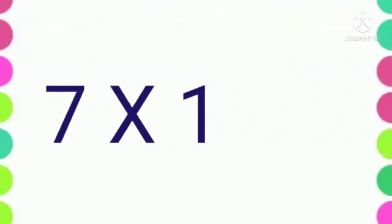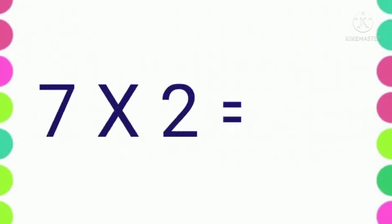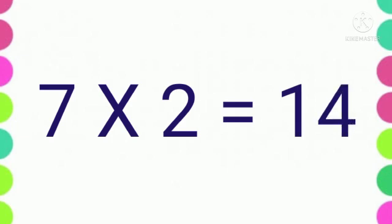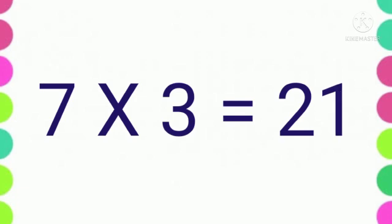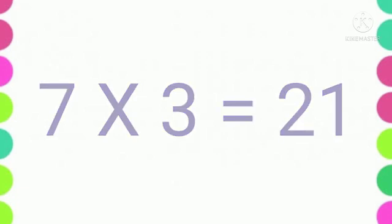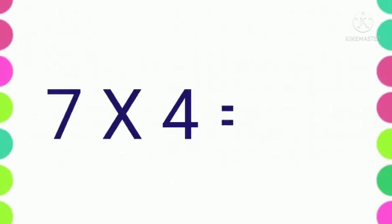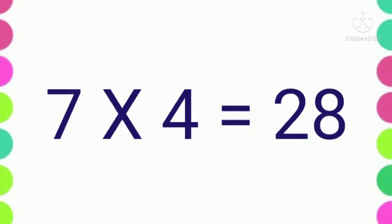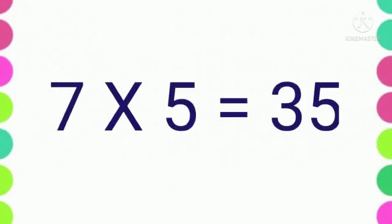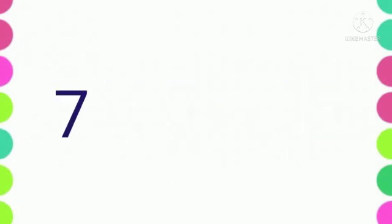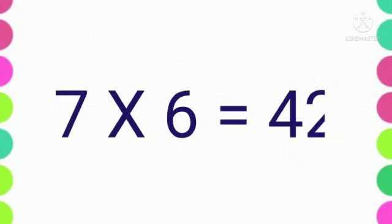Seven ones are seven. Seven twos are fourteen. Seven threes are twenty-one. Seven fours are twenty-eight. Seven fives are thirty-five.